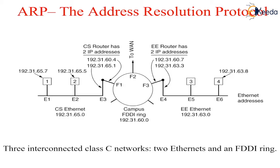The protocol used for asking this question and getting the reply is called ARP — address resolution protocol. The advantage of ARP over a configuration file is its simplicity. At this point, the IP software on host 1 builds an Ethernet frame addressed to E2, puts the IP packet (addressed to 192.31.65.5) in the payload field, and sends it onto the Ethernet. The Ethernet board of host 2 detects the frame, recognizes it as addressed to itself, scoops it up, and causes an interrupt. The Ethernet driver extracts the IP packet from the payload and passes it to the IP software, which processes it.